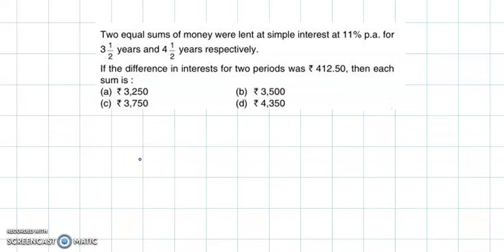Hello and welcome back. Let's discuss an example from time value of money. The question is: two equal sums of money were lent at simple interest at 11% per annum for 3.5 years and 4.5 years respectively. If the difference in interest for the two periods was ₹412.50, then find the sum.